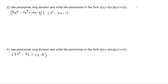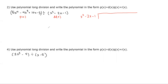Today we're going to look at polynomial long division. Question 2: use polynomial long division and write the polynomial in the form P(x) = D(x)·Q(x) + R(x). We have P(x) and D(x), so we need to find Q and R using long division. Let's set up our long division.